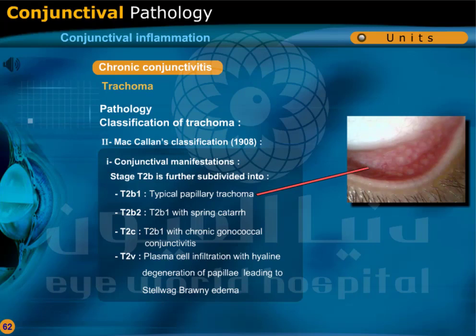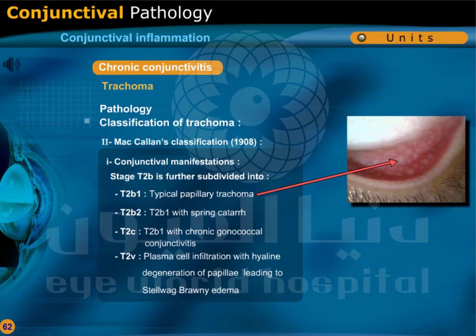Stage T2B is further subdivided into T2B1: typical papillary trachoma; T2B2: T2B1 with spring catarrh; T2B3: T2B1 with chronic gonococcal conjunctivitis; T2V: plasma cell infiltration with hyaline degeneration of papillae leading to subepithelial edema.